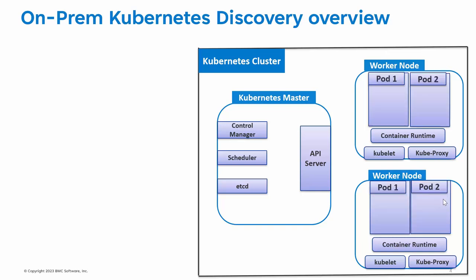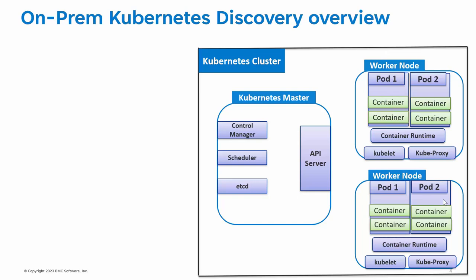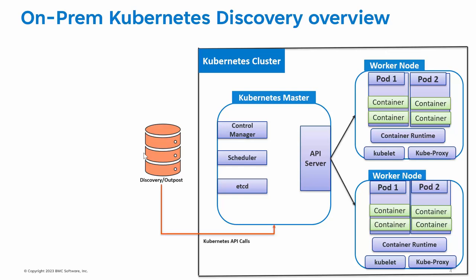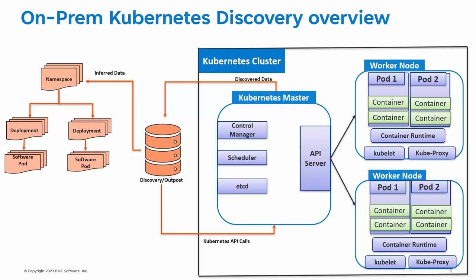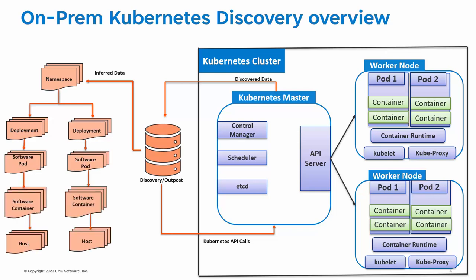Now let's talk about a pod. A pod is a group of one or more containers such as Docker containers that share storage for those containers and options about how to run the container. Now to discover these nodes, services and resources, you would need to have a BMC Discovery Appliance or Outpost and configure the credentials that the Discovery Appliance or Outpost can use to connect to the master node. Then Discovery will run Kubernetes API requests, which are predefined in Discovery, to collect the data of these Kubernetes node services. Discovery then infers the discovered data and creates various nodes such as namespace, deployments, software pods, software containers, host nodes and cluster.